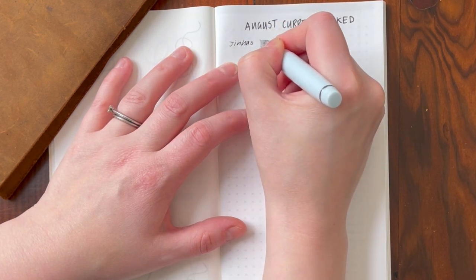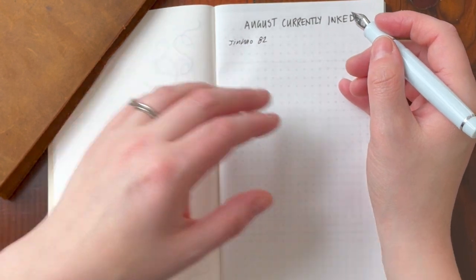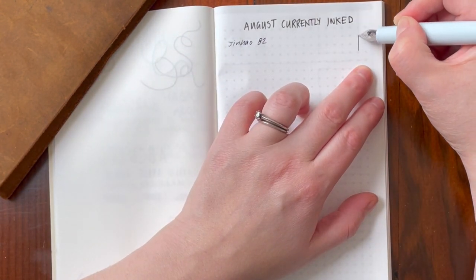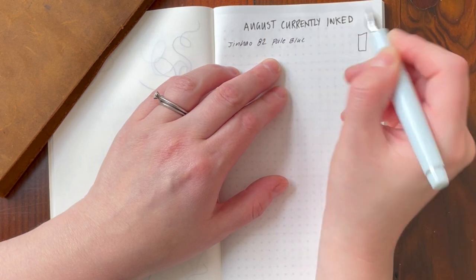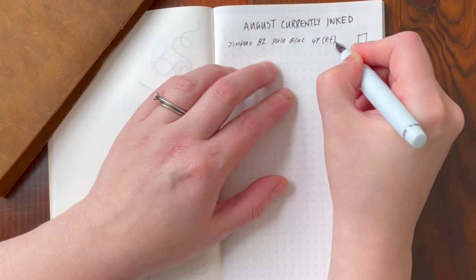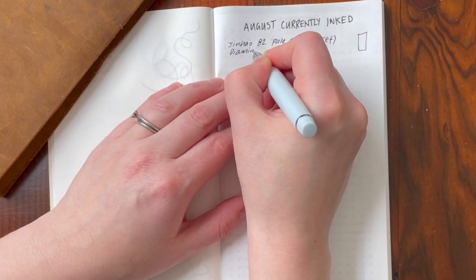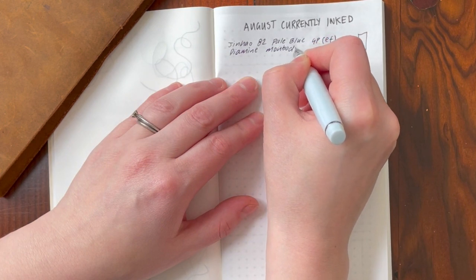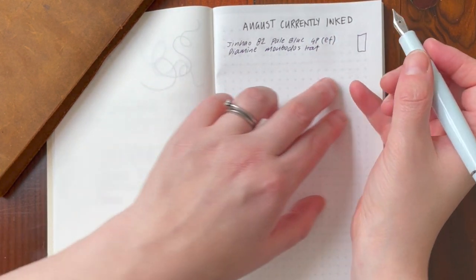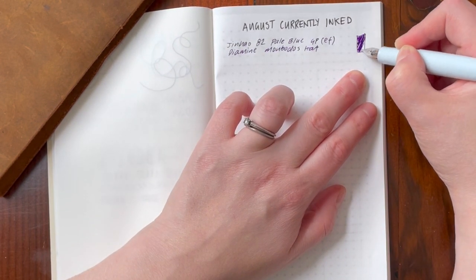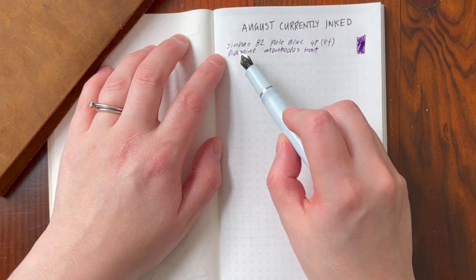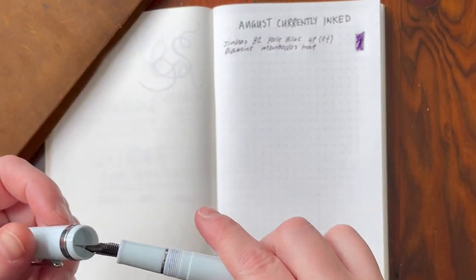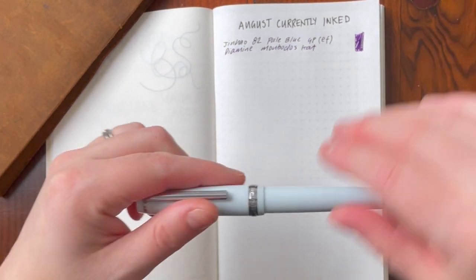So this is the Jinhao 82. It's pale blue. And I'm just going to write that it's a Goulet Pen Extra Fine. And this is inked with Diamine Mon Rose Hat. Now hopefully, I'm not sure if you can see, but even with this extra fine nib, that gold sheen comes up a bit on the J there. Let's see how it looks in the swatch. So that is my first pen for the month of August.